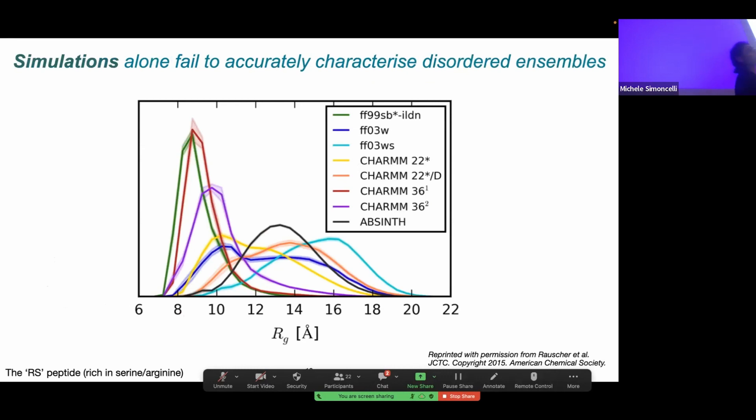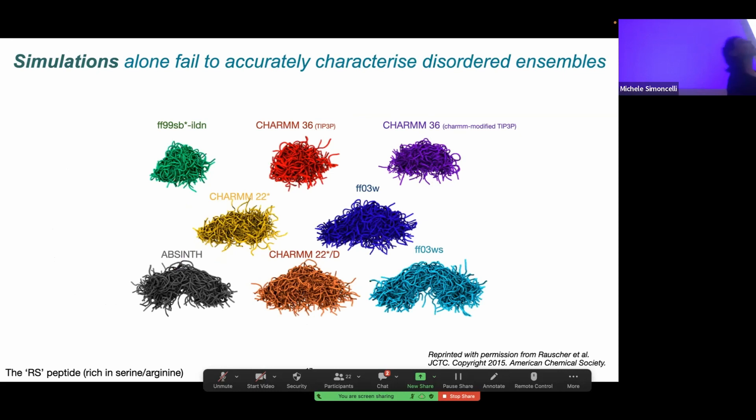To show how challenging this can be for disordered proteins, generally force fields, protein force fields are quite good at predicting these minima. This is a wonderful study in which the authors took a model peptide called the RS peptide because it's rich in arginine and serine residues and simulated it using several state-of-the-art force fields for intrinsically disordered proteins. What they show is that the radii of gyration predicted by these force fields is very different depending on the choice of force fields. Just a word of warning that you can't always trust what your simulations are telling you. Depicted another way, here are representations of the structural ensembles, and you can just see how different they are depending on the choice of force fields.